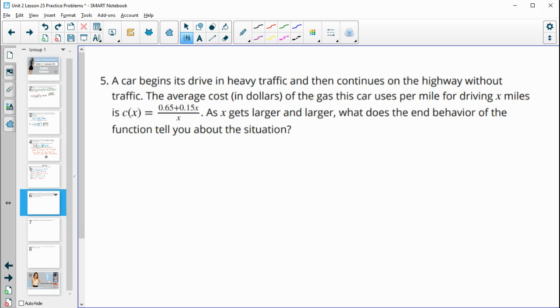Number 5, a car begins to drive in heavy traffic, then continues on the highway without traffic. The average cost in dollars of the gas this car uses per mile. So the cost of gas per mile for driving X miles is this function here. So as X gets larger and larger, meaning they drive more and more miles, what does the end behavior of the function tell you? So remember, if we look at this, we can divide this function out by dividing the X under both pieces.